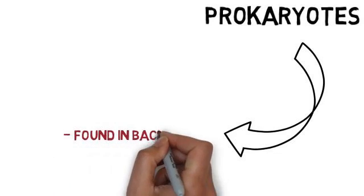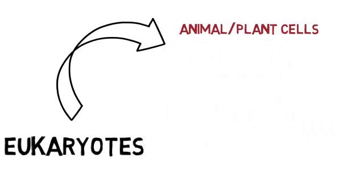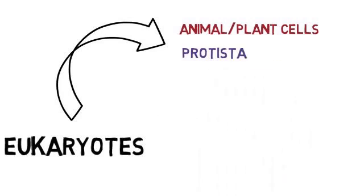Prokaryotes primarily are in bacteria, or things we call cyanobacteria, which used to be called blue-green algae. And eukaryotes we have in animal cells, plant cells, protoctista and fungi.